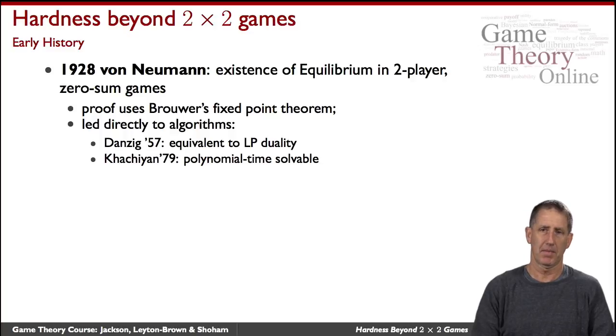That led directly to algorithms for computing fixed points in such linear programs. First, there was Danzig's algorithm that's equivalent to what in modern days is called LP duality, an exponential procedure, although in practice used widely. Of note is the Khachiyan polynomial time approach to solving linear programs, although in practice it's not used as widely, it's not as practical a procedure.